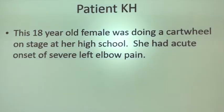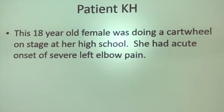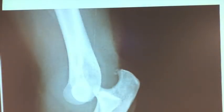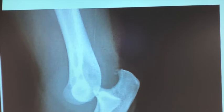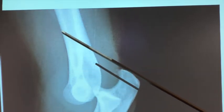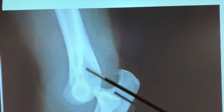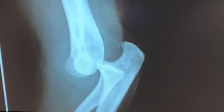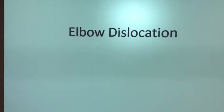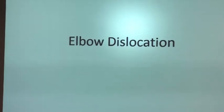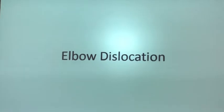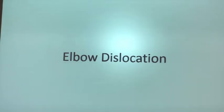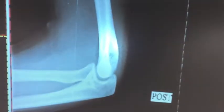Let's talk about another trauma. An 18-year-old female doing a cartwheel on stage at her high school had acute onset of severe left elbow pain. On x-ray, this is the elbow joint — or was the elbow joint. This is the humerus and the ulna. This is an elbow dislocation, which we see in the emergency room. This patient can have her elbow reduced — basically put back into place — using sedation in the emergency room.